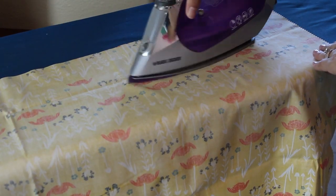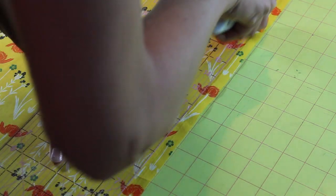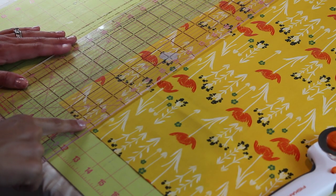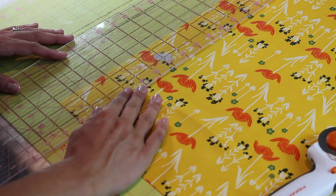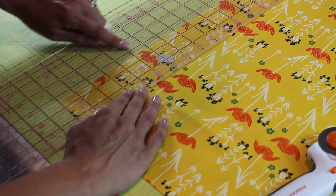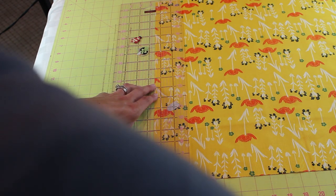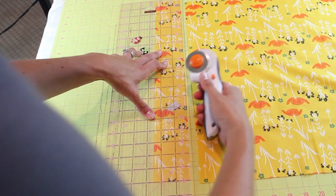First, you want to give your fabric a nice good press. This is fabric by Leah Duncan. And this is me cutting off my selvedge to get a nice clean edge. Use that bottom line to get a nice 90 degree angle. And we're going to cut two and a half inch strips.